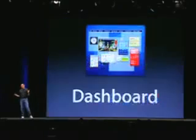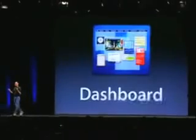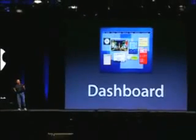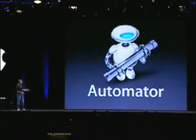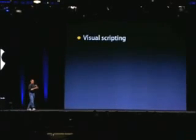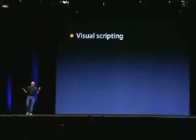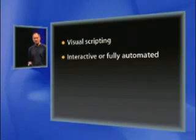That is Dashboard. Once we had Exposé done, we knew what we had to do next. Next up is a really cool app that I know I'm going to be using a lot — called Automator. Automator is visual scripting. We've had AppleScript — we have the best scripting in the land — but you have to learn AppleScript to use it. Our AppleScript team said let's take this even further and do visual scripting. You can build interactive or fully automated scripts.